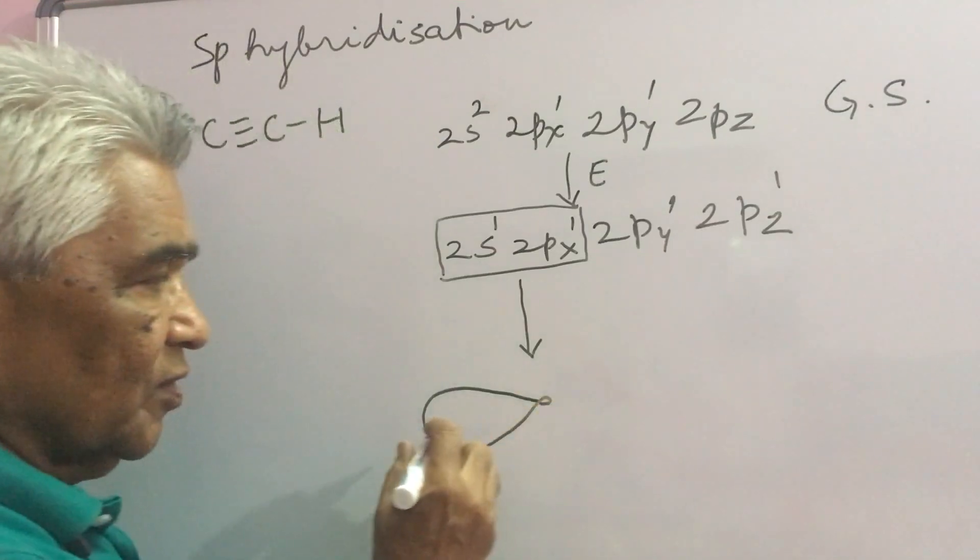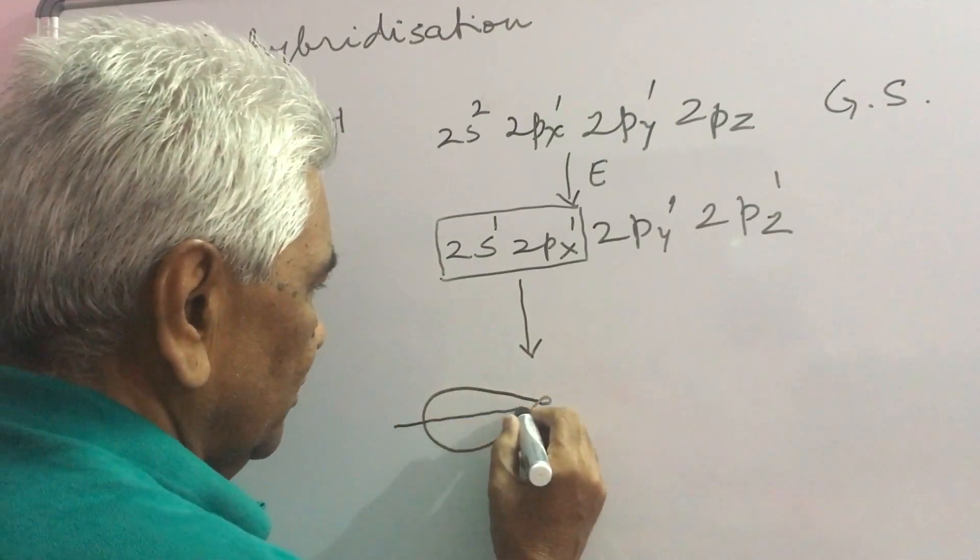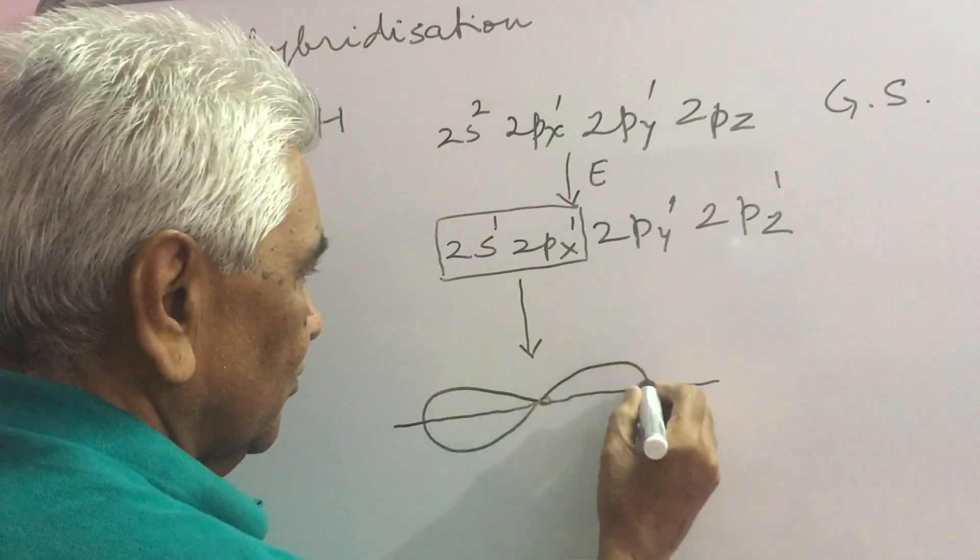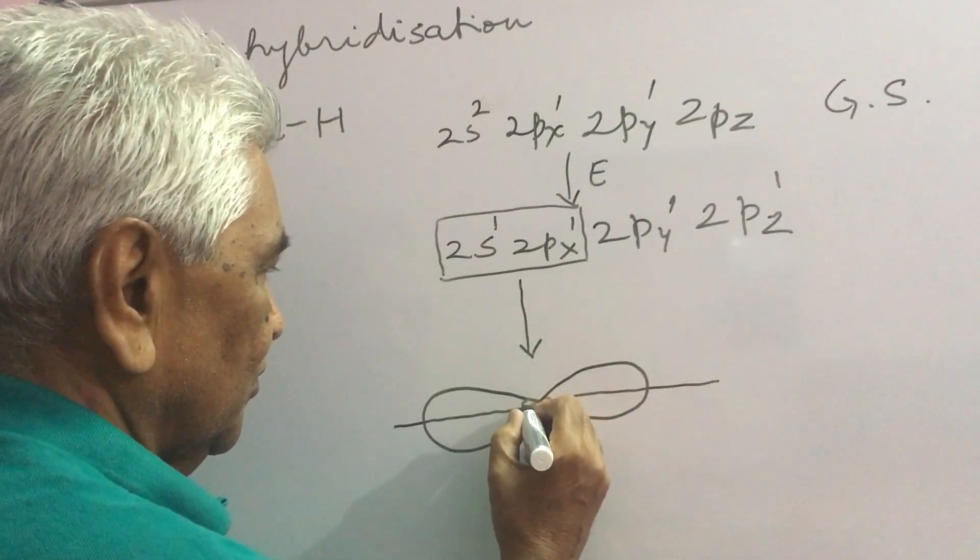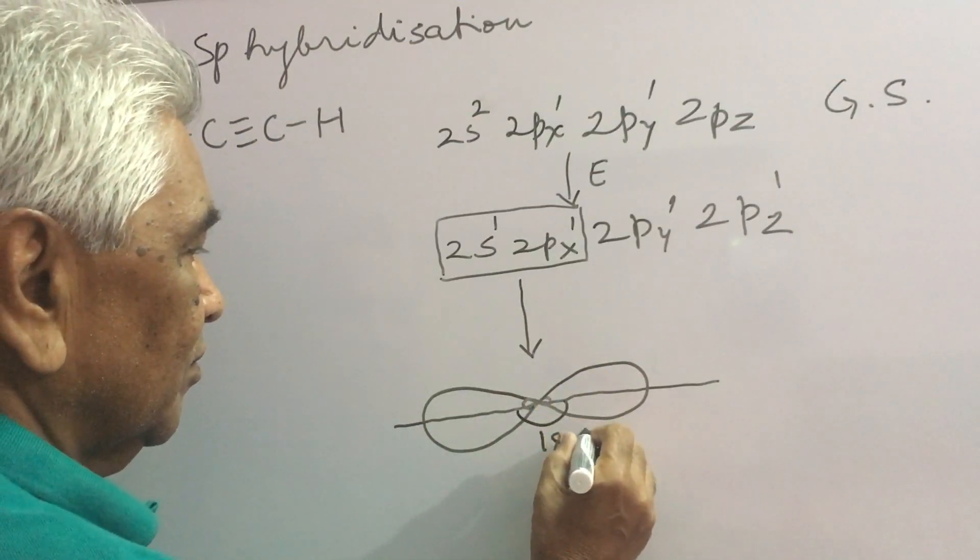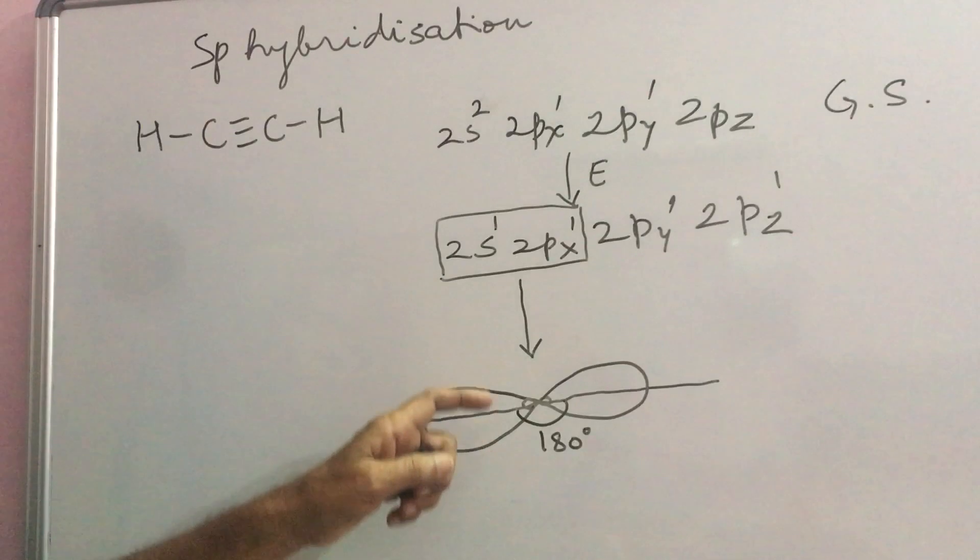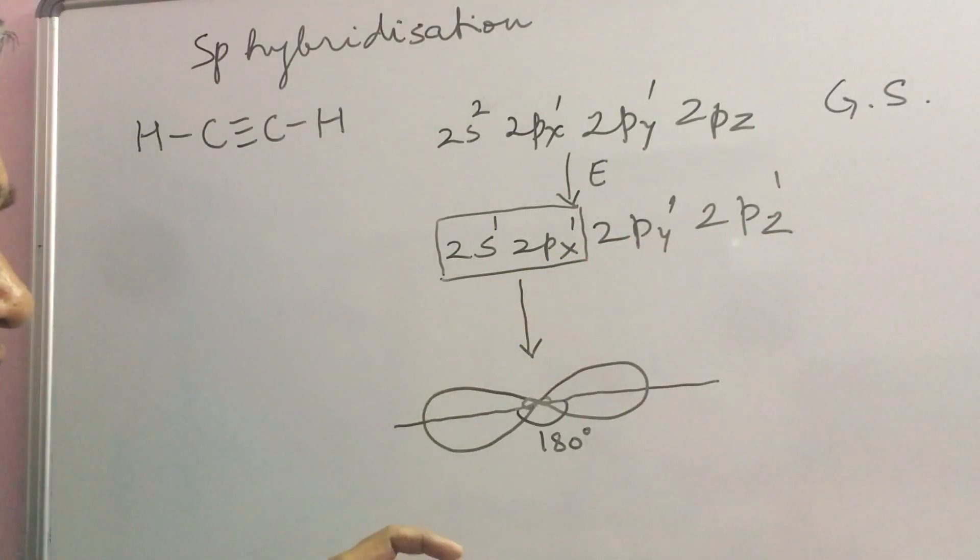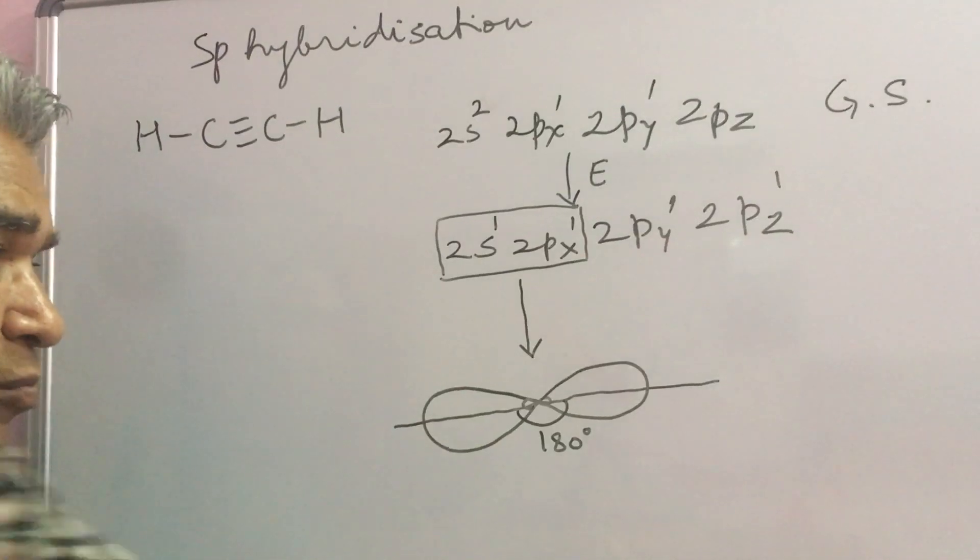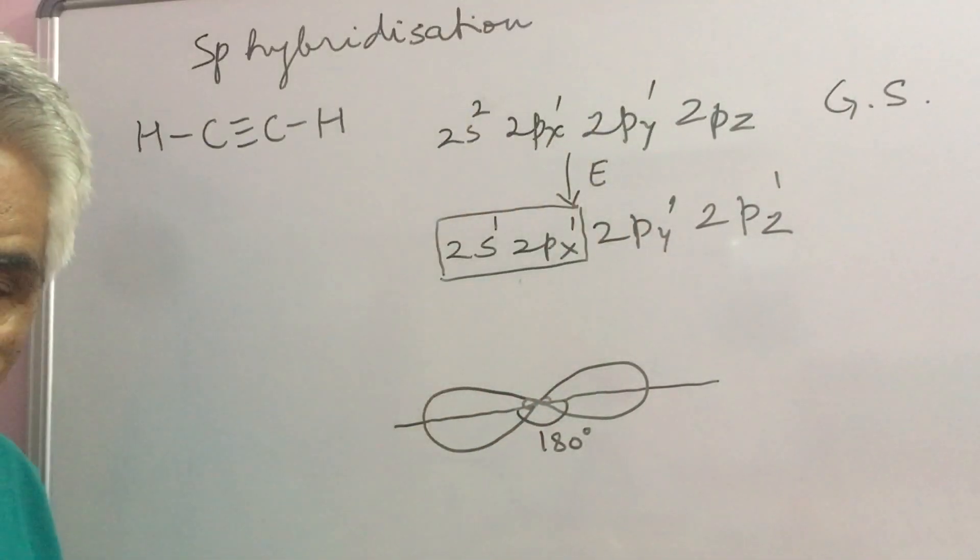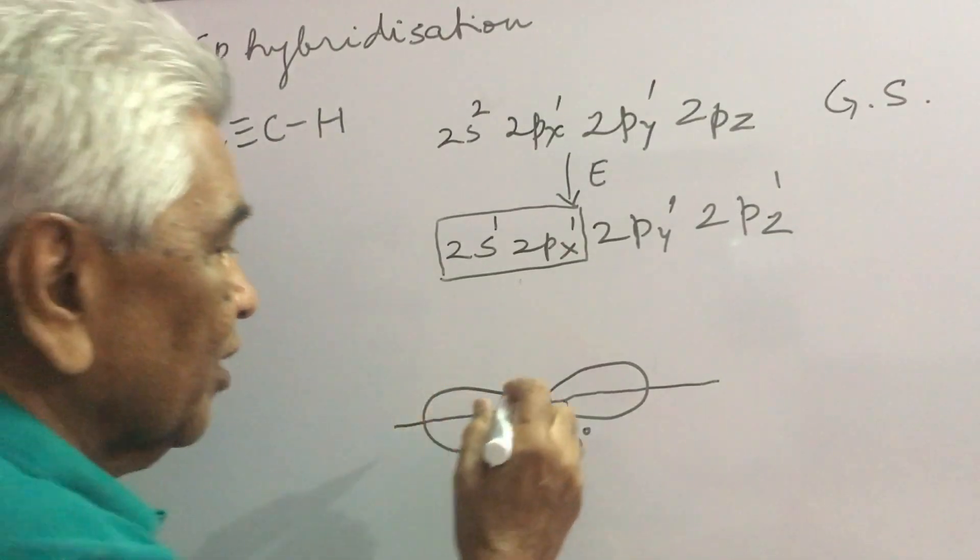One is this and another collinear with this 180 degree angle. These two P orbitals stand perpendicularly on these two hybrid orbitals.